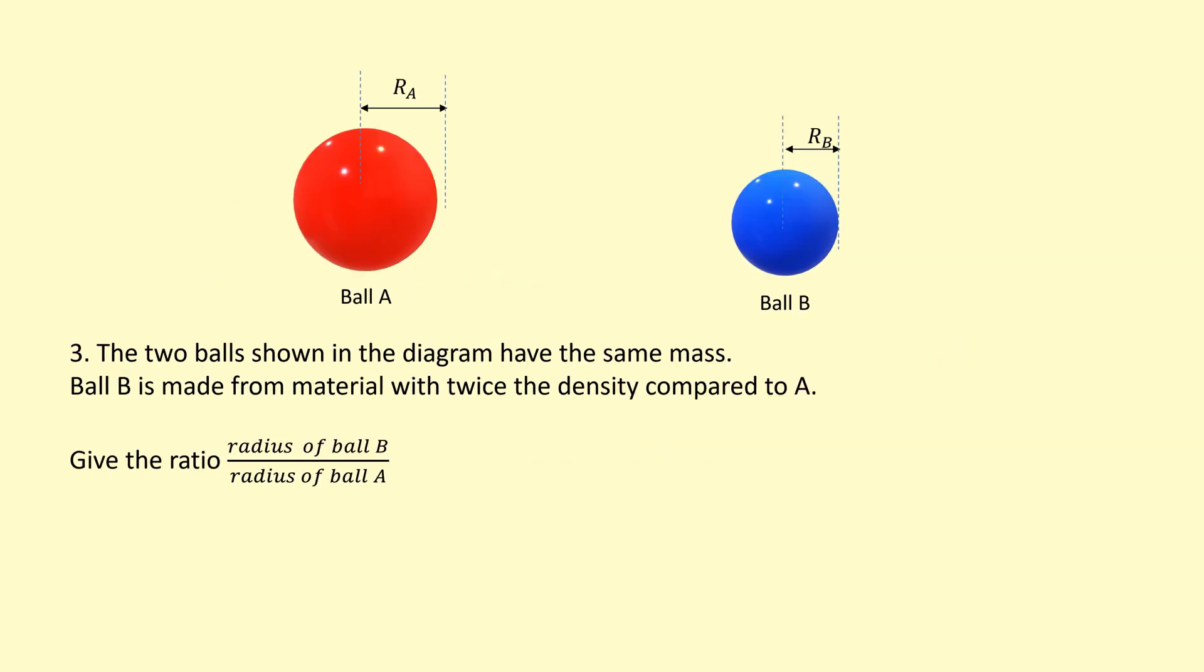The two balls shown in the diagram have the same mass. Ball B is made from a material which has twice the density compared to A. We need to get the ratio of the radius of B to the radius of A.